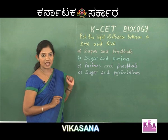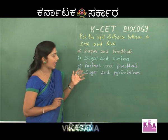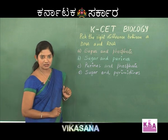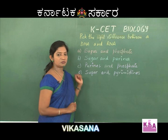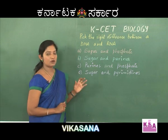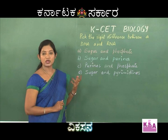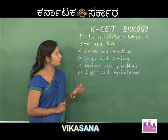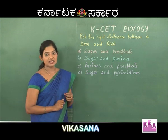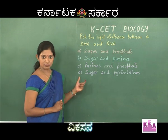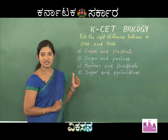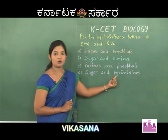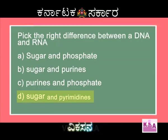The next difference to find out is with respect to phosphate — as such there is no difference there. The next one is nitrogen base. In DNA the nitrogen bases are adenine, guanine, cytosine, and thymine, whereas in RNA thymine is replaced by uracil, so there is a difference in nitrogen bases as well. Uracil and thymine fall under the category of pyrimidines, so the right answer is option D.